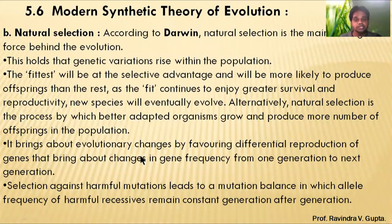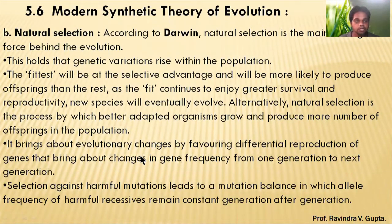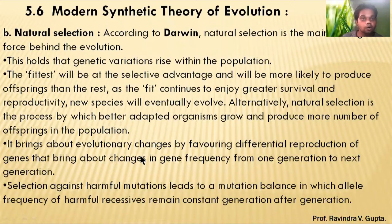Natural selection brings about evolutionary change by favoring differential reproduction of genes, bringing about a change in gene frequency from one generation to the next. Some organisms favor variation, forming different types of genes. The allele number will increase, and the new organism will also increase through evolution.